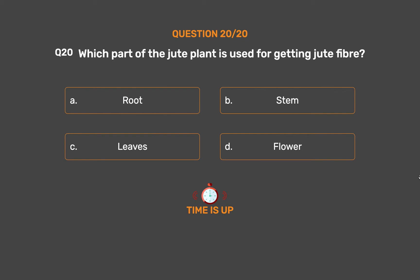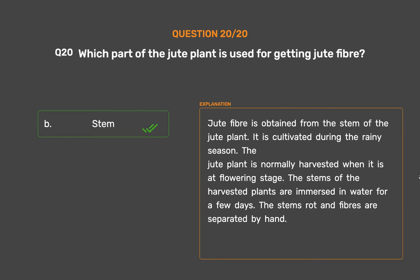The correct answer is Option B, Stem. Jute fiber is obtained from the stem of the jute plant. It is cultivated during the rainy season. The jute plant is normally harvested at the flowering stage. The stems of the harvested plants are immersed in water for a few days, after which the stems rot and fibers are separated by hand.